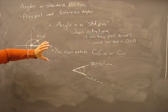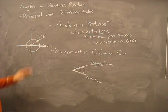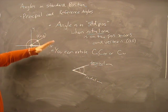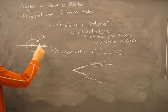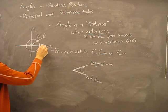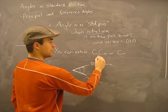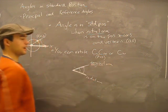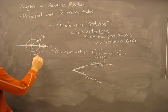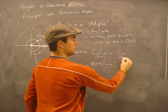Now that we have an angle in standard position on our Cartesian plane, you can rotate an angle counterclockwise or clockwise. If you're rotating counterclockwise — moving up like this — that's considered a positive angle. Going the opposite direction, clockwise, going down, that would be a negative angle.